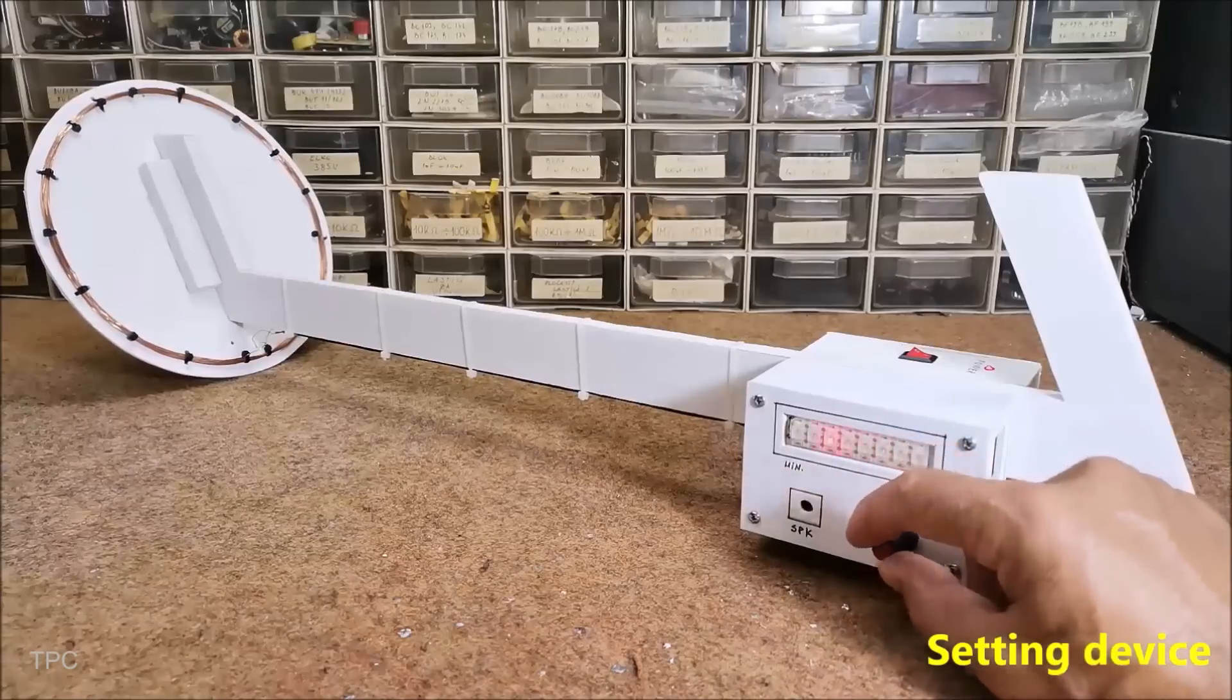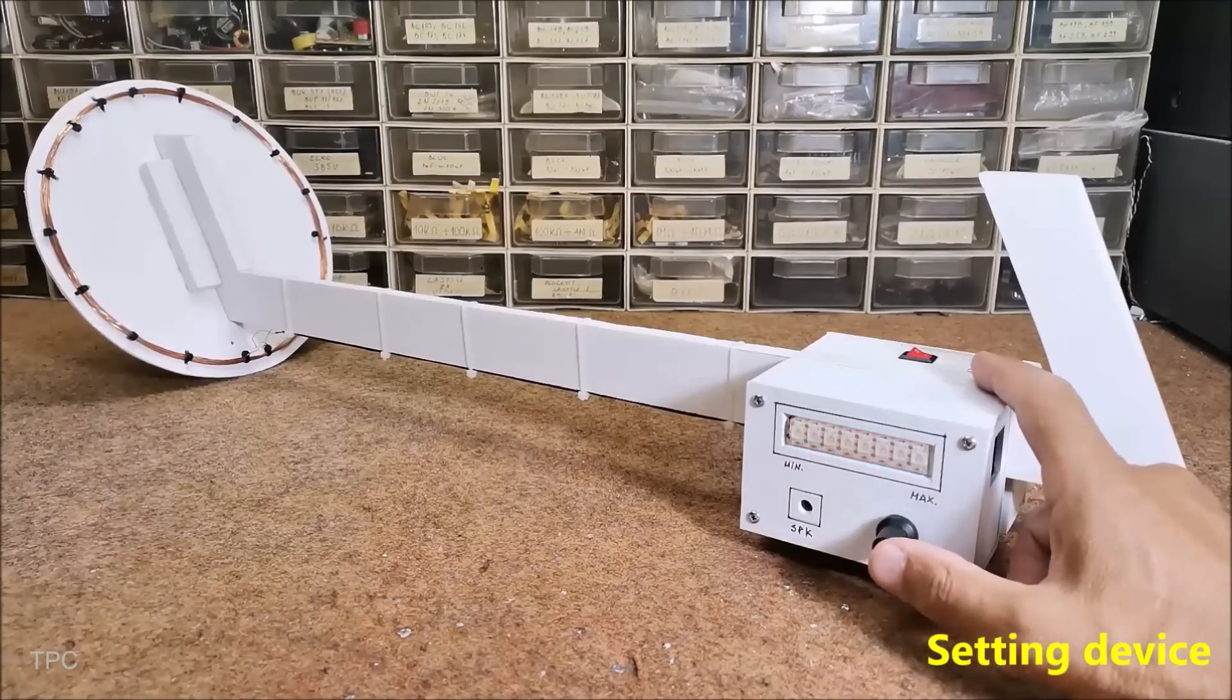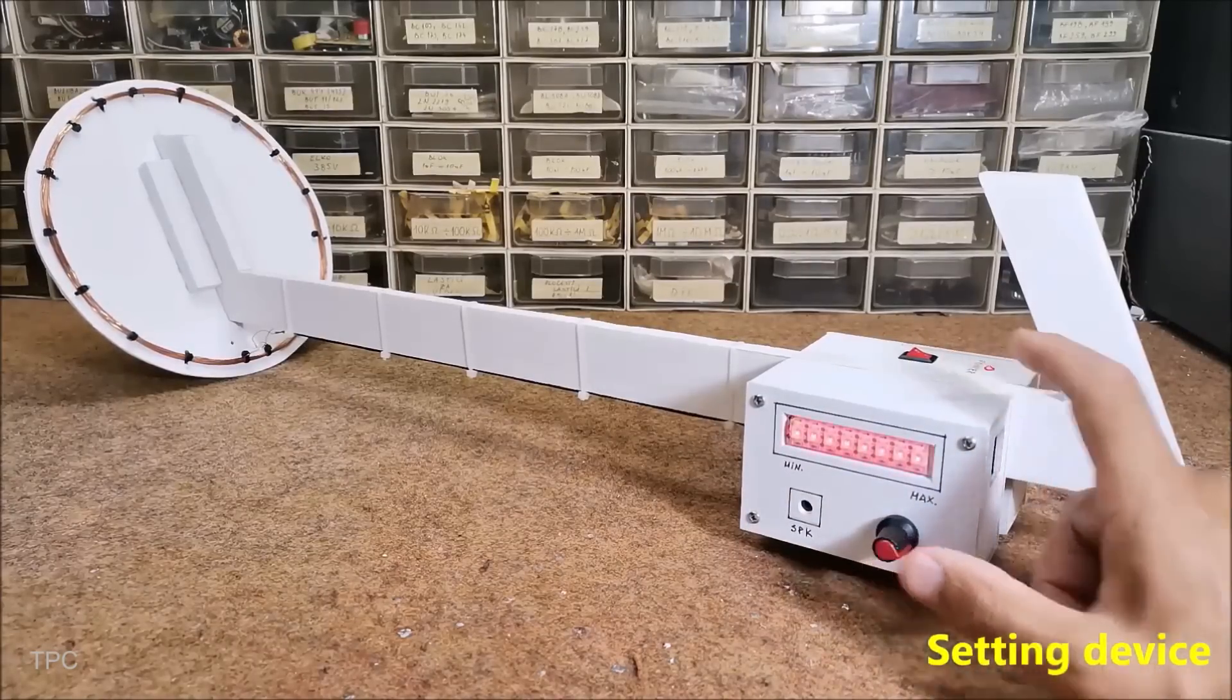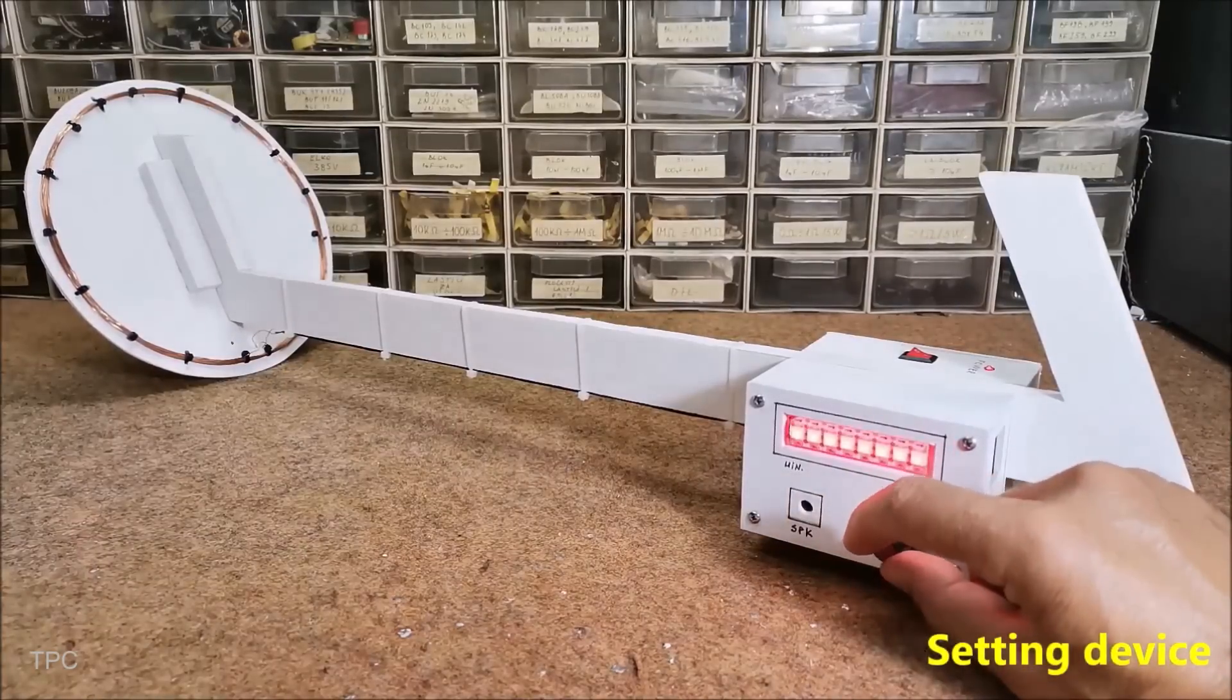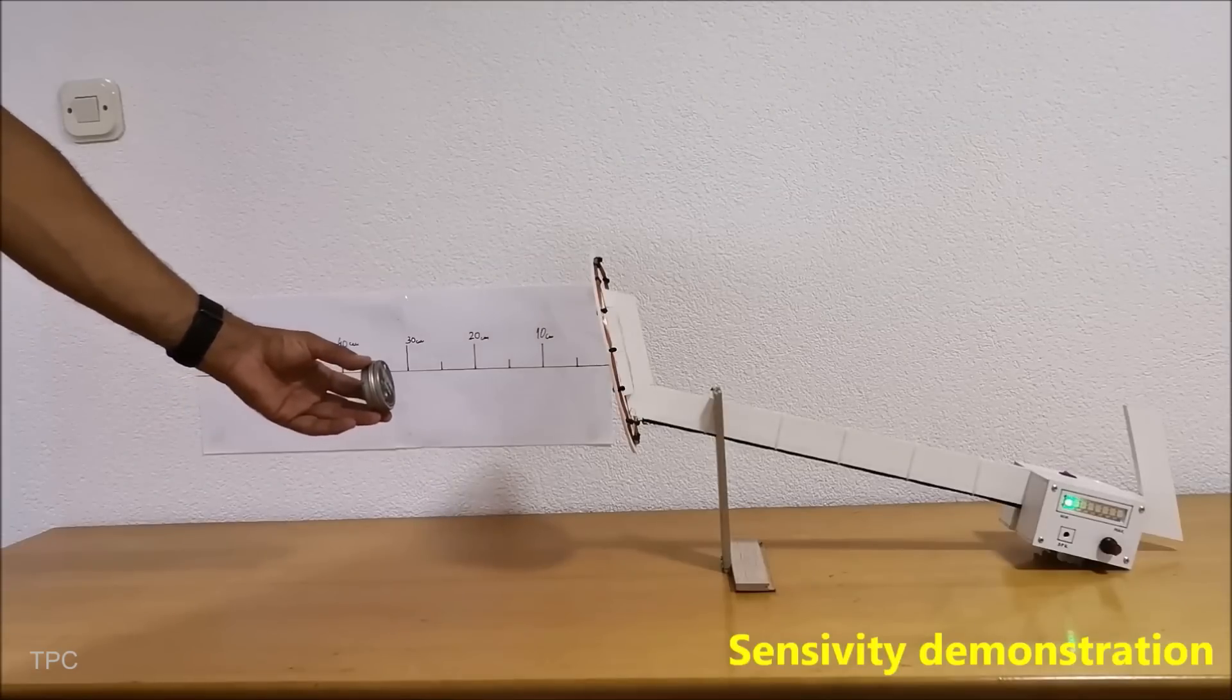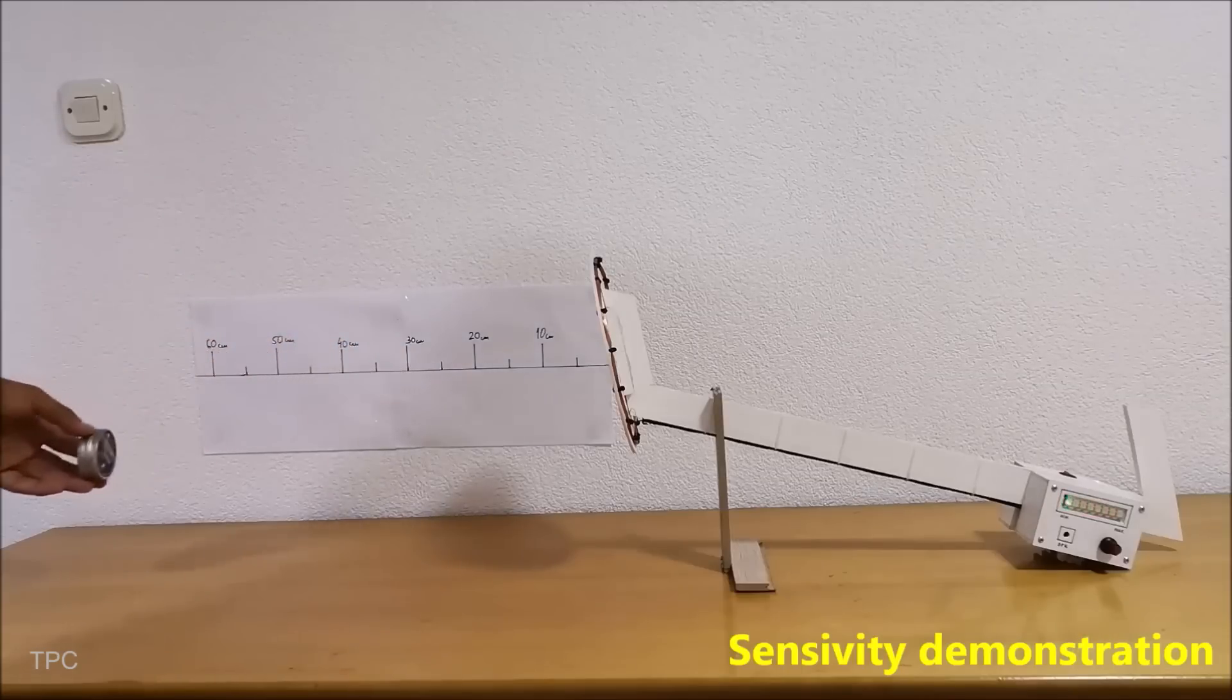The rotary encoder acts as the primary control interface, allowing users to navigate different modes, from sensitivity adjustments to pulse duration changes for detecting larger or smaller objects. A strip of eight LEDs provides clear visual feedback, while a buzzer gives audio alerts when metal is detected.